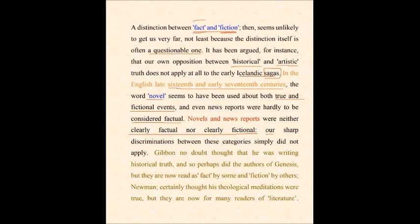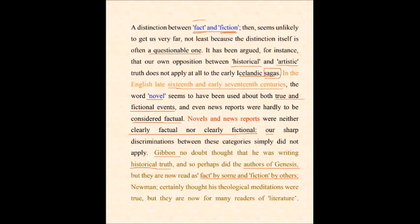Sharp discriminations between these categories simply did not apply, making a sort of confusion — not to take a decision. According to Eagleton, Gibbon undoubtedly thought he was writing historical truth. If it is historical truth, why not make it literary? Some believe it can be, others don't. Perhaps did the authors of Genesis — they are now read as fact by some and fiction by others. Newman certainly thought his theological meditations were true, but for many readers of literature, they are fictional.